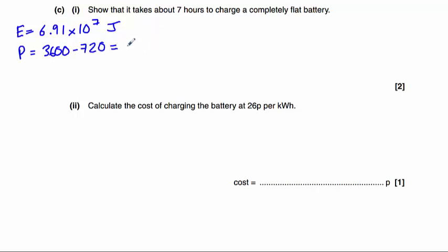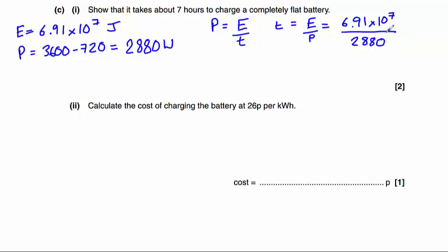which gives us 2,880 watts. Power equals energy divided by time, therefore time equals energy divided by power. Our energy here is 6.91 times 10 to the 7 joules. That's the energy stored by our battery. And the power that is supplied to it is 2,880 watts, or 2,880 joules per second.